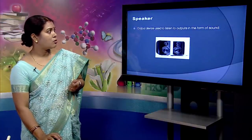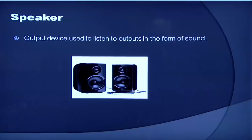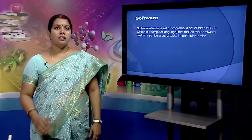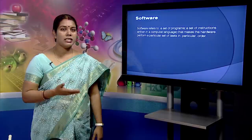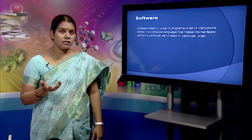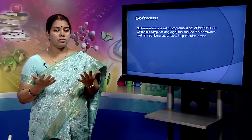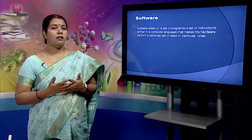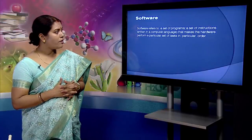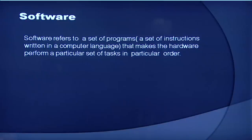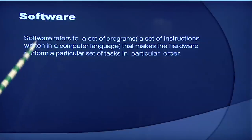The next output device is a speaker, which basically outputs sounds. Now, we have seen hardware devices — the CPU, the input devices and the output devices. But without software, hardware cannot do anything in a computer. Software refers to a set of programs — a set of instructions written in a computer language that makes the hardware perform a particular set of tasks in a particular manner.